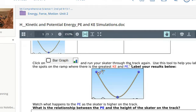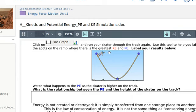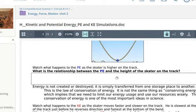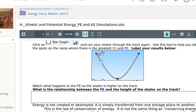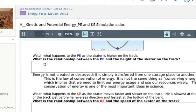Run the skater through the track again. Use this tool to help you label the spots on the ramp where the KE and PE are greatest. Hey class, what does KE stand for? Kinetic energy. Excellent. What does PE stand for? Potential energy. Excellent. Best audience money can buy right here in the room. And we're going to label our results below. So if I'm writing, I could write where the KE and the PE are the highest on the track right here, or I could type that in this little box down here.